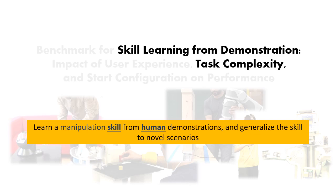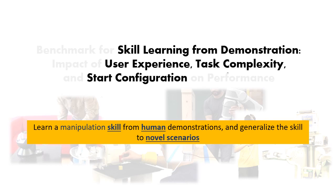Secondly, the human demonstrator, who is an end user, can vary a lot in terms of user experience. The experience level can range from a naive user with no experience all the way to an expert user. Lastly, since the goal is to generalize the skill to novel scenarios, these novel scenarios can be exemplified by new positions of the robot — which can be similar to or very different from the demonstrated initial positions.